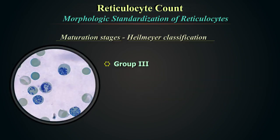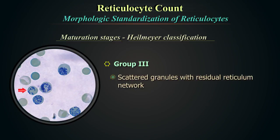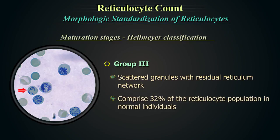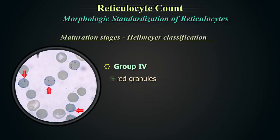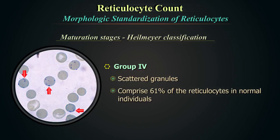Group 3 shows scattered granules with residual reticulum network and comprises 32% of the reticulocyte population in normal individuals. Group 4 shows scattered granules and comprises 61% of reticulocytes in normal individuals.